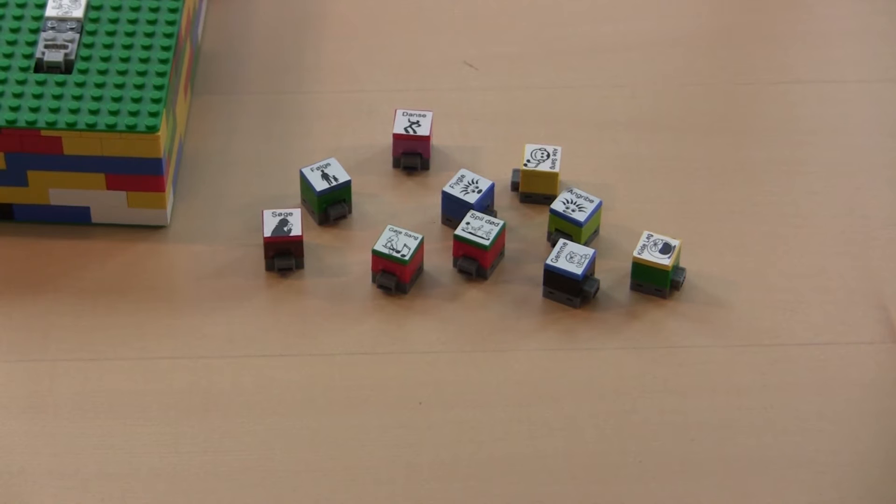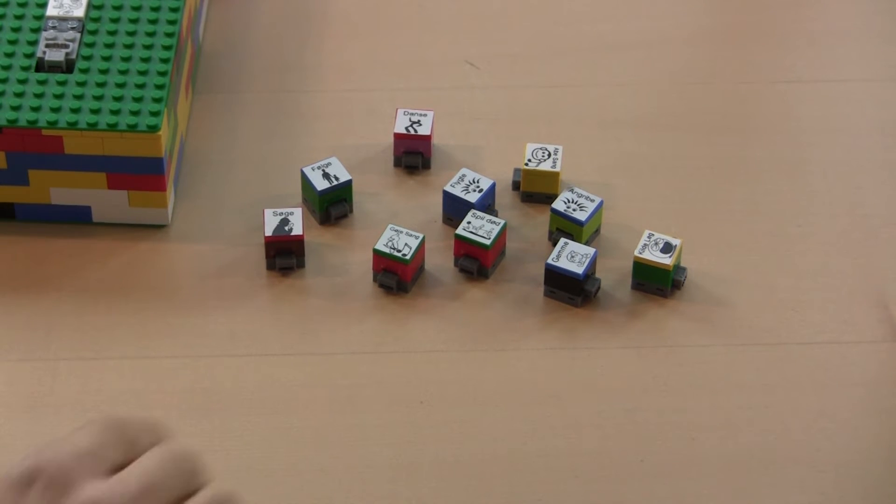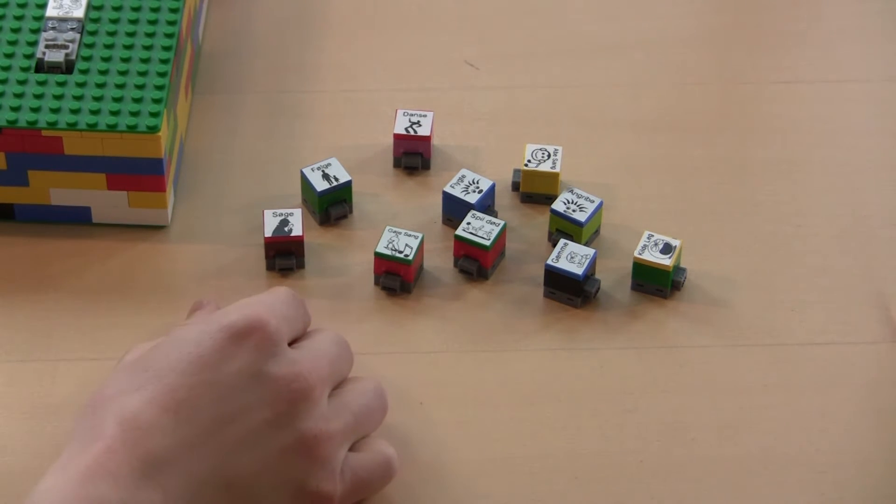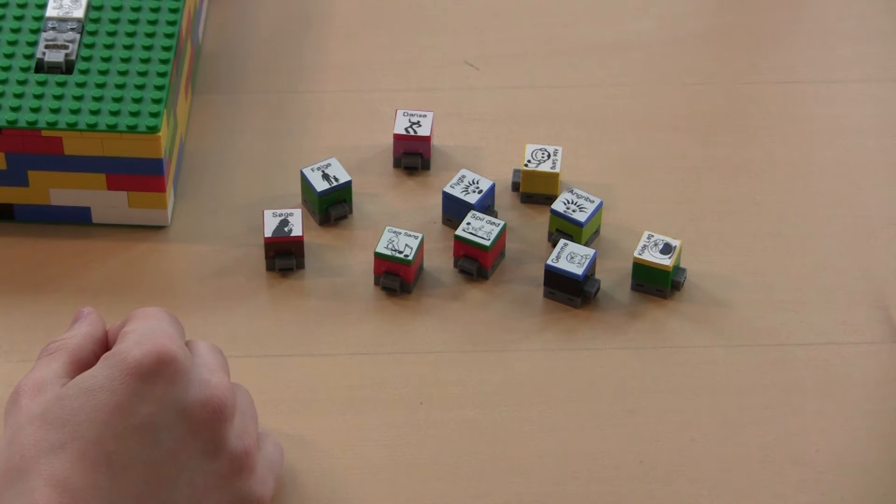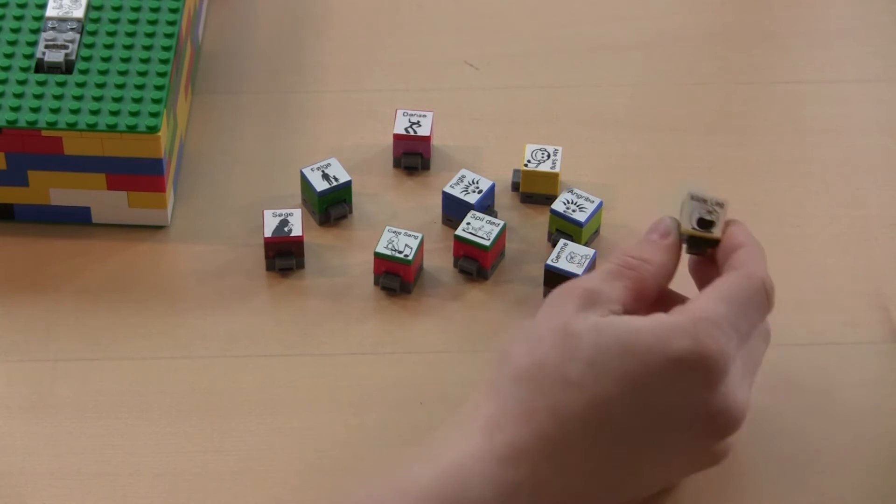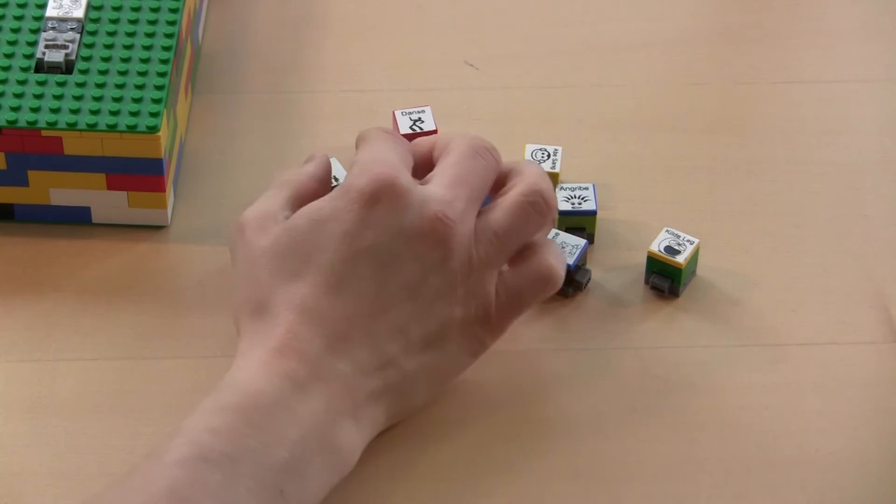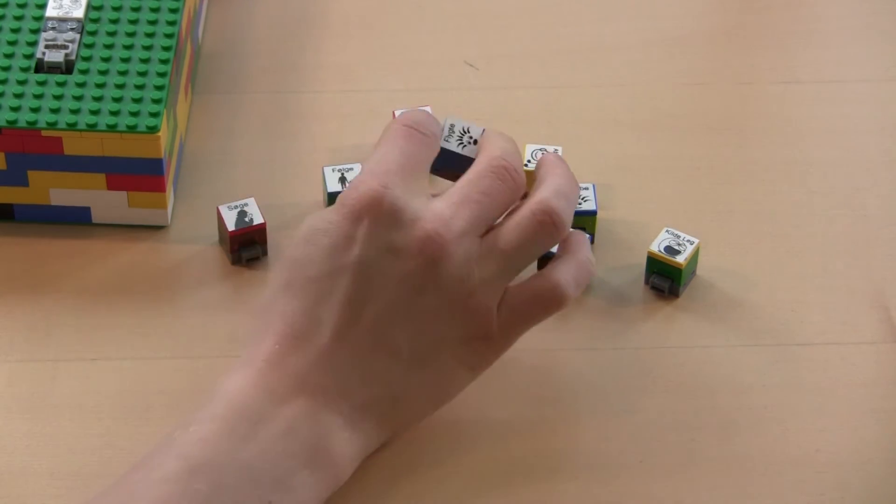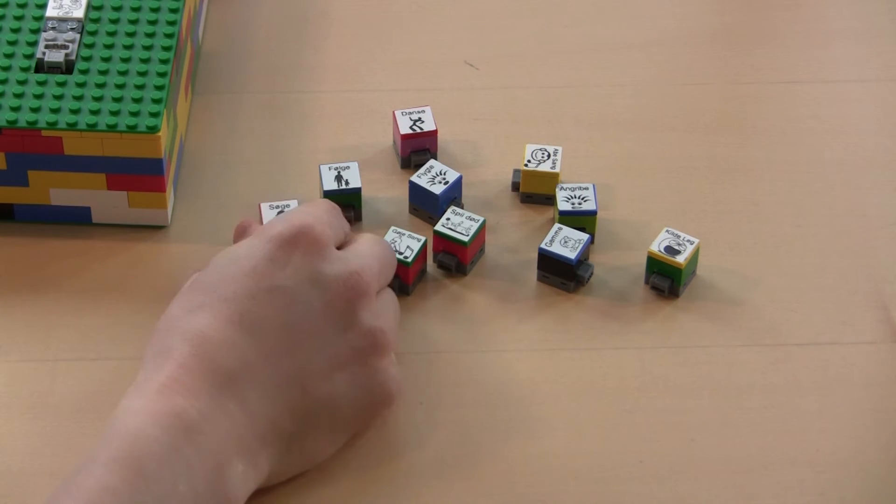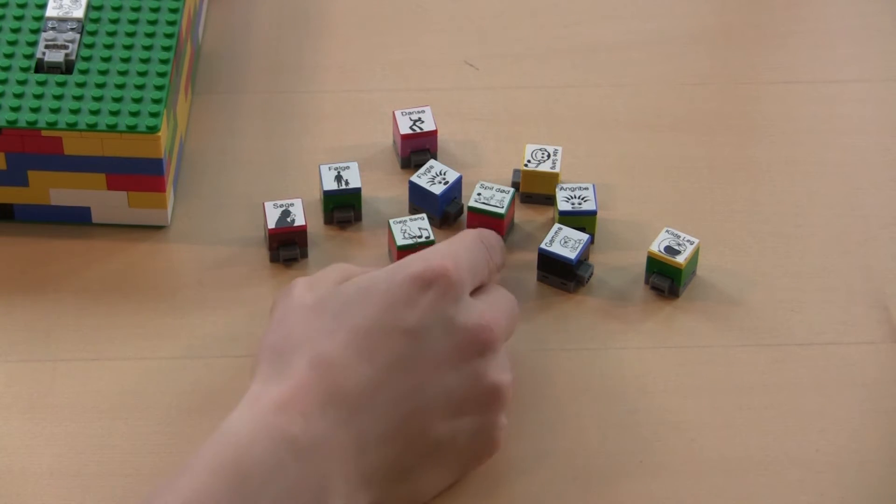So let's start programming our Bumblebee. These bricks contain different emotions or games that you can play with the robot. There is tickling, dancing, or being angry, or maybe follow me, or escape from me, going around looking for things, singing songs, and playing dead.